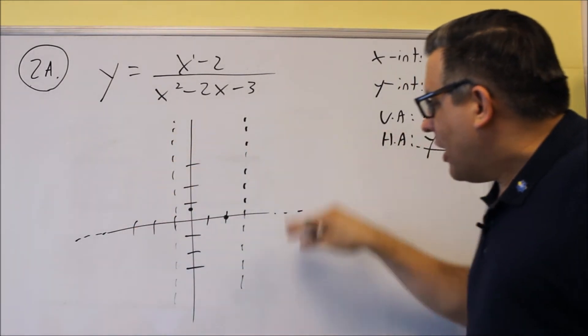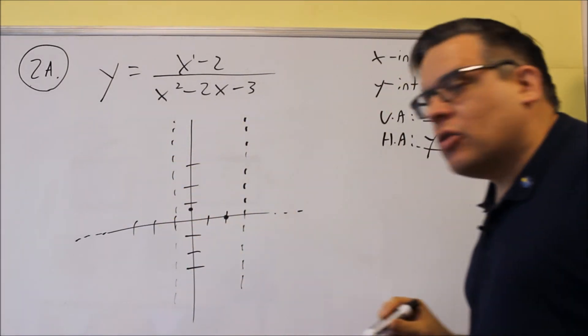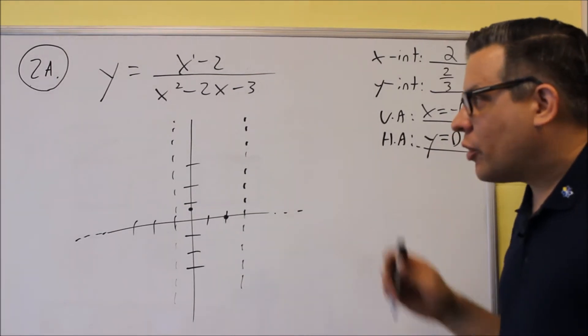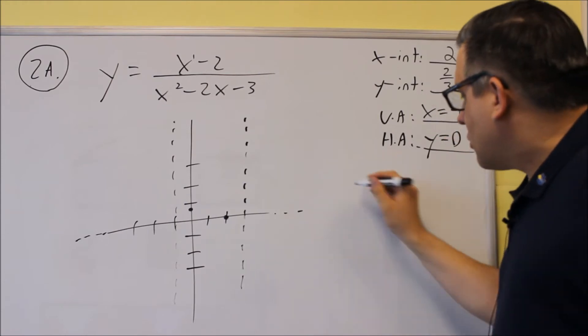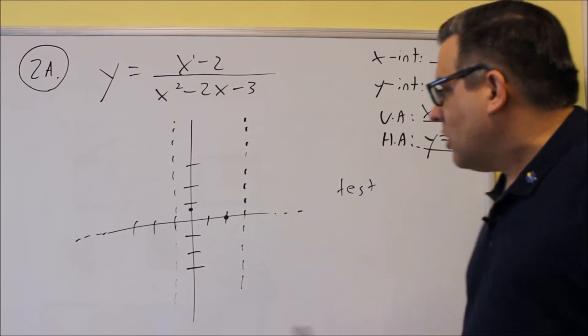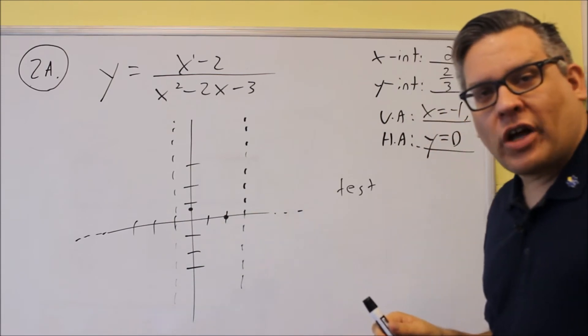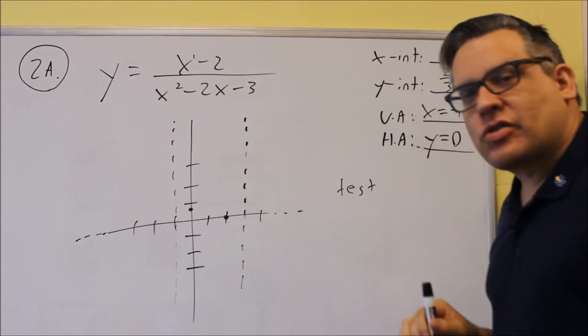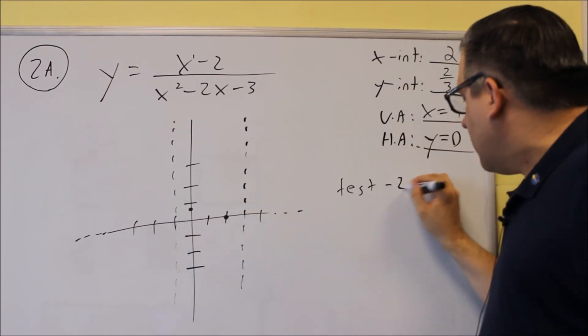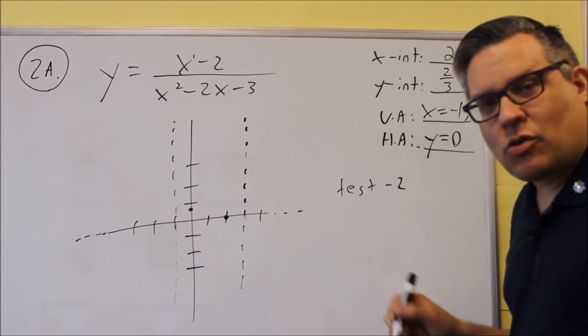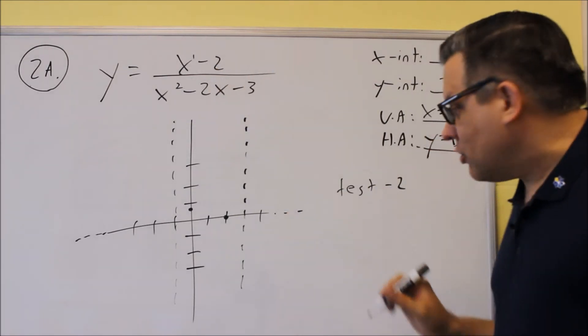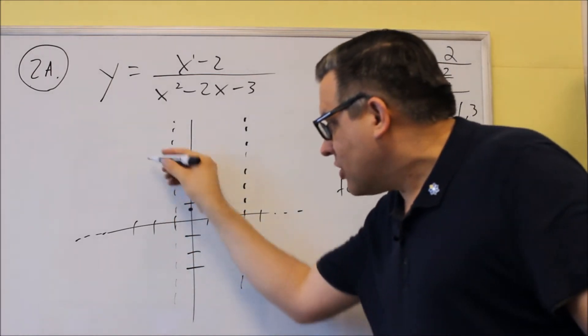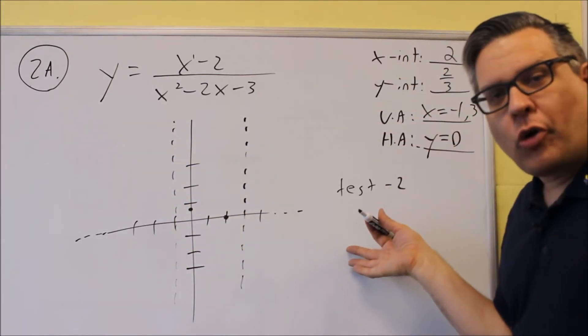Now we have to figure out where the graph actually is in each one of these pieces. Now on the two ends, the graph can either be above or below. Because the graph doesn't give us enough information to determine that, this is where you're going to resort to your test numbers. So what I'm going to do is test a number that is to the left of that vertical asymptote, and I'm going to test one that's to the right. So let's try negative two, so we're going to test x equals negative two, and we're going to put that into the original function.